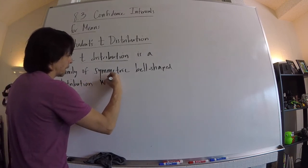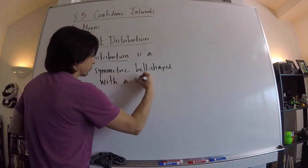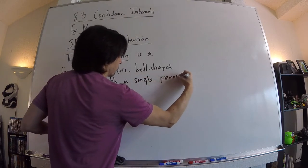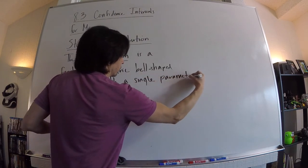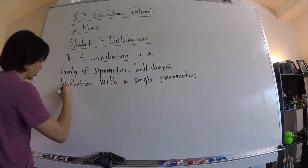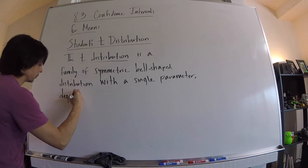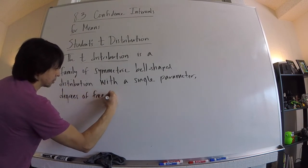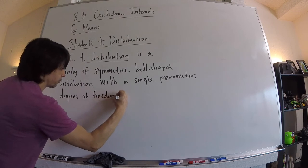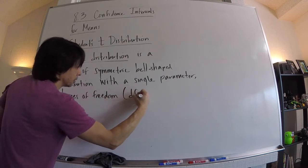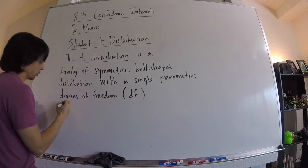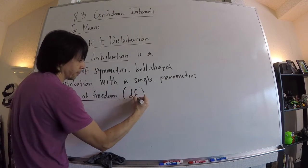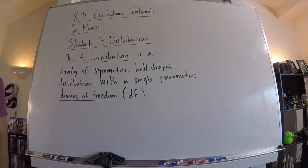It has a single parameter, and that parameter is called the degrees of freedom. We will see that a lot, most often with the abbreviation DF for degrees of freedom.